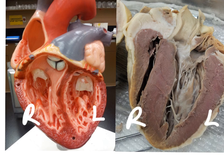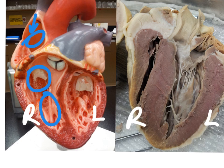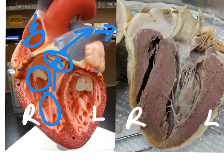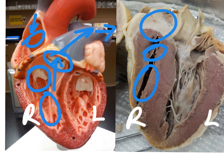Let's follow the path of deoxygenated blood coming in the superior vena cava into the right atria. It would then go through the tricuspid valve into the right ventricle and then back up out the semilunar valve into the pulmonary trunk and then the pulmonary arteries. On the sheep heart, we're not necessarily seeing the vena cava or the atria because the section wasn't quite done to show that. You can slightly see the tricuspid valve and here would be the right ventricle, going up and out the pulmonary semilunar valve and out the pulmonary trunk.